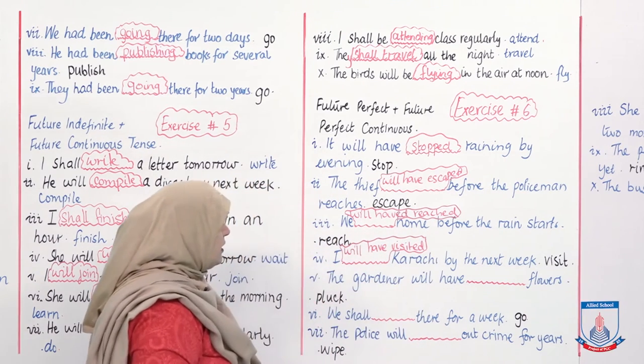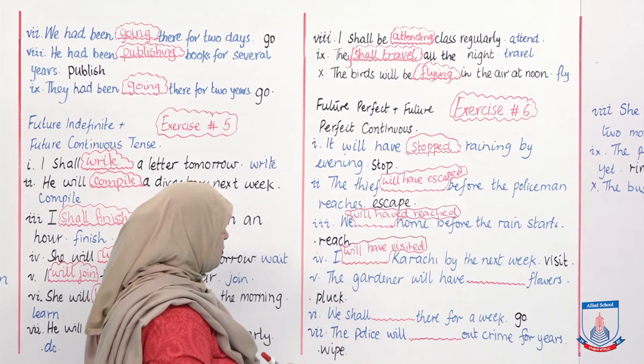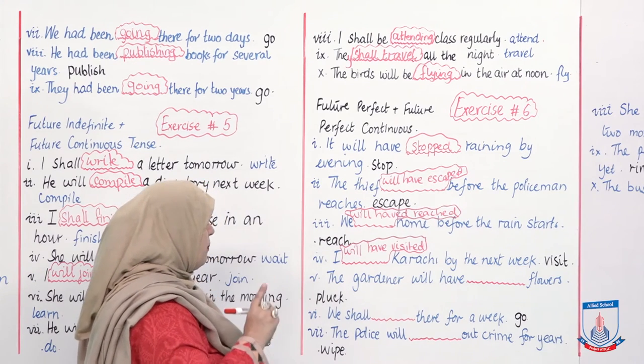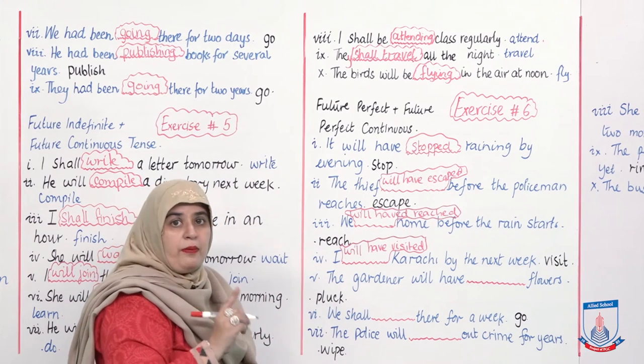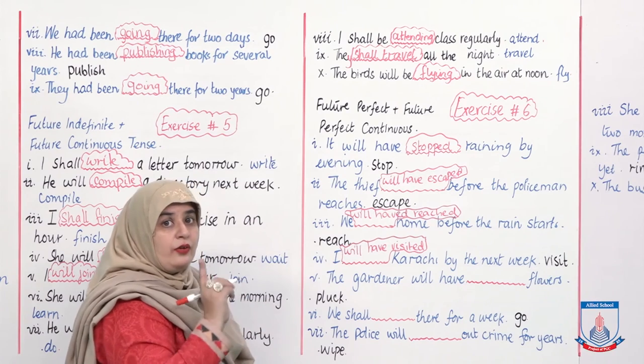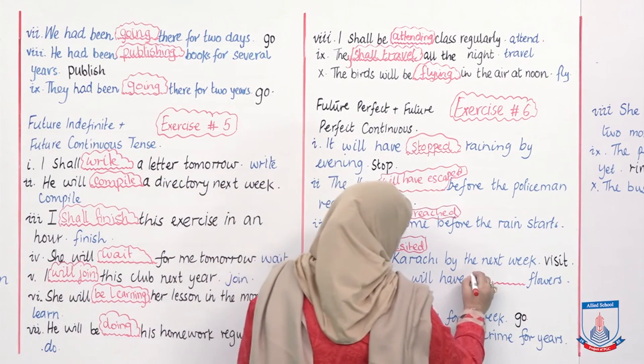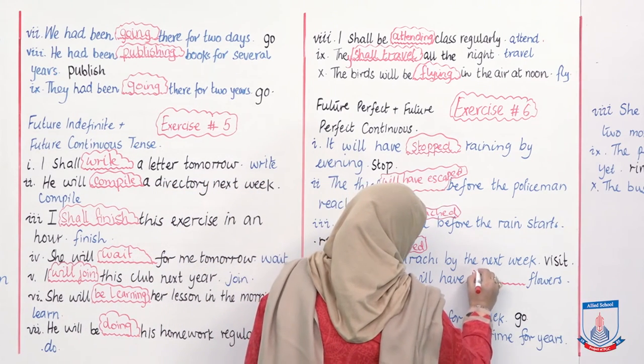'The gardener will have ___ flowers.' Pluck, plucked, plucked — regular verb. Answer: 'The gardener will have plucked flowers.'